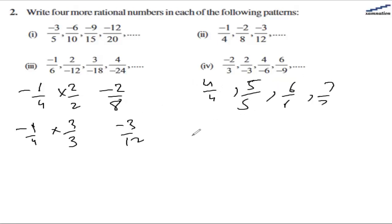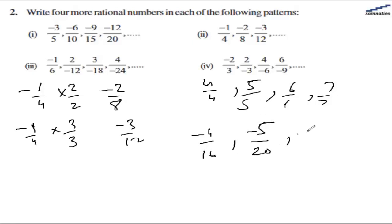The four next numbers in part two are: multiplying by 4/4 gives -4/16, then -5/20, then -6/24, and then -7/28. So these are the 4 numbers that will come in this pattern.